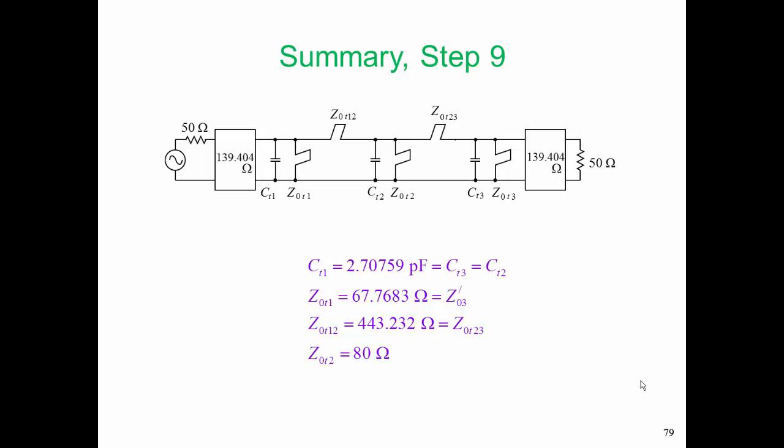This is where our prototype stands now. We have capacitor values that are 2.7 pF. They're all the same here at this point in time. Now, we're designing a filter at 1 GHz, a 2.7 pF surface mount capacitor is a very reasonable value. It will perform very well.